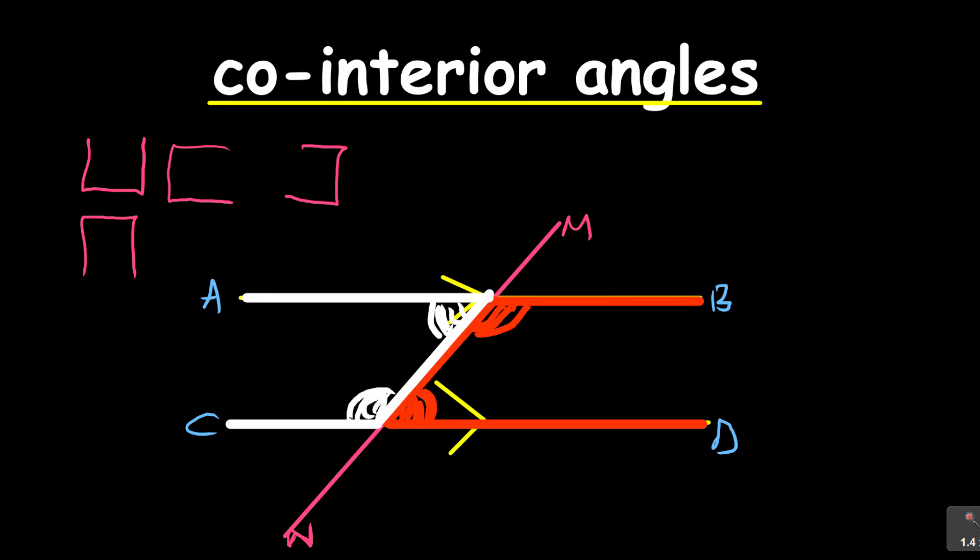Now they've got a special name. Here we are saying co-interior angles are supplementary. That's the key word there. Co-interior angles, what are these? They are supplementary. And remember what does the word supplementary mean? It means they add up to 180 degrees. So co-interior angles add up to 180 degrees, meaning they are supplementary.